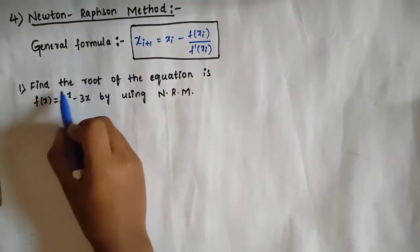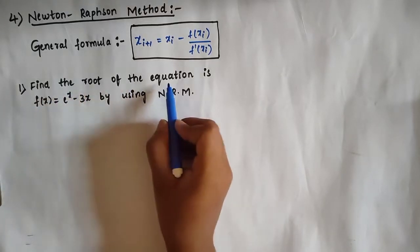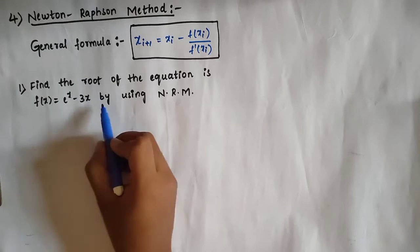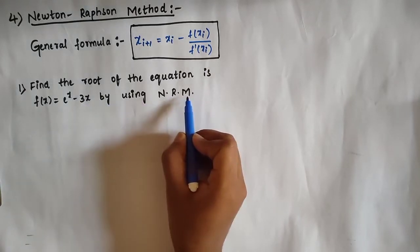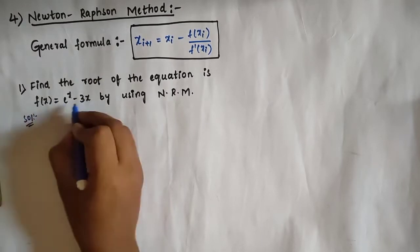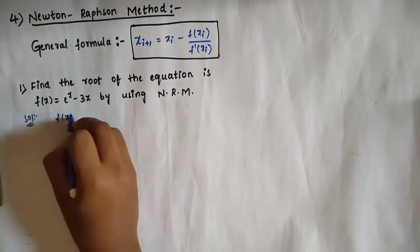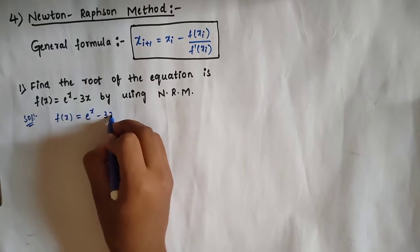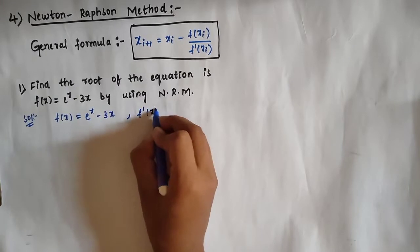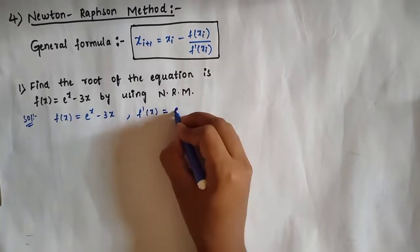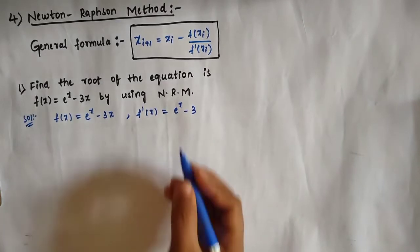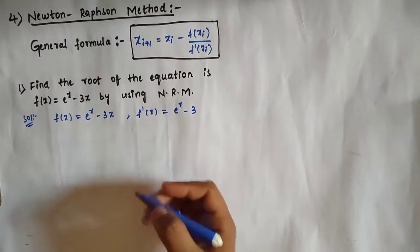The problem is to find the root of the equation f(x) = e^x minus 3x using the Newton-Raphson method. So f(x) = e^x minus 3x, and the derivative f'(x) = e^x minus 3.